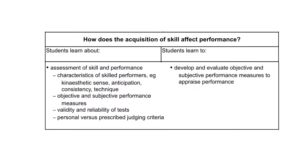Looking at where this comes from in the syllabus, we're looking at the focus question: how does the acquisition of skill affect performance? Under this dot point — assessment of skill and performance — we've looked at characteristics of skilled performers, objective and subjective performance measures, validity and reliability of tests, and today we look at personal versus prescribed judging criteria.